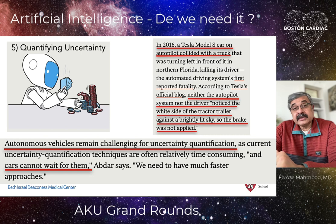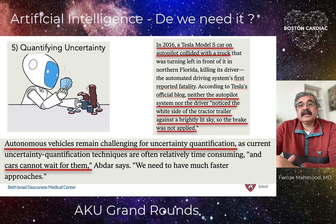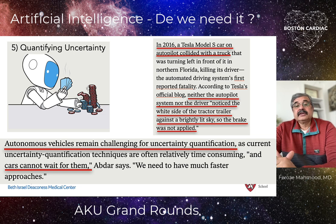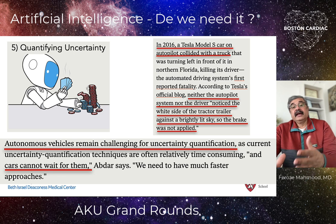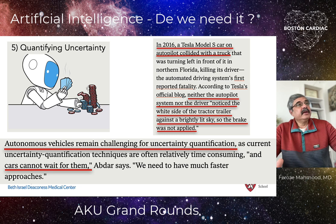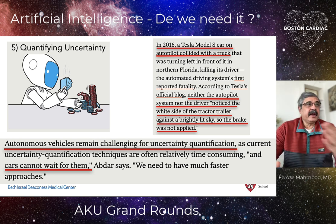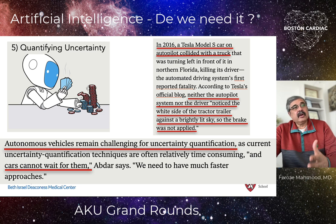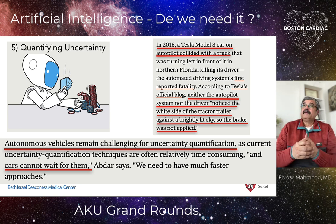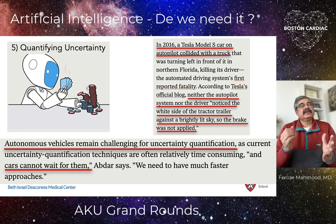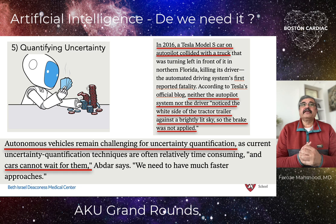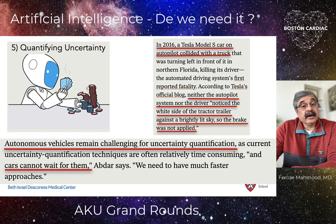Fifth is quantifying uncertainty. A Tesla Model S on autopilot collided with a truck because neither the autopilot nor the driver noticed the white side of the tractor-trailer against the brightly lit sky, so the brakes weren't applied. The AI assumed the side of the truck was sky and kept driving until it smashed into it. This is a failure of quantifying uncertainty — we as humans sometimes have a gut feeling that something looks different and maybe we should stop. That gut feeling is missing in AI and cannot be taught.